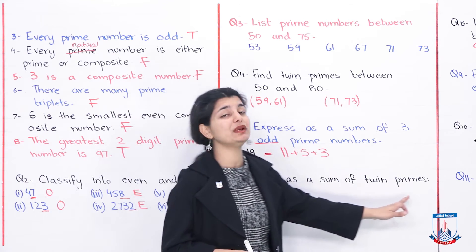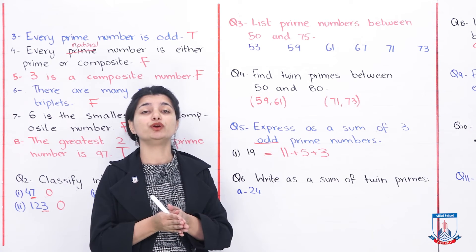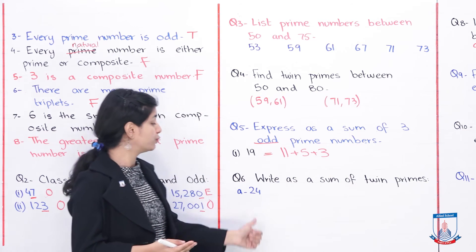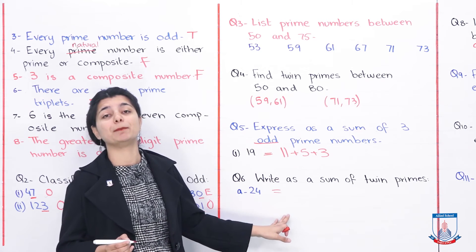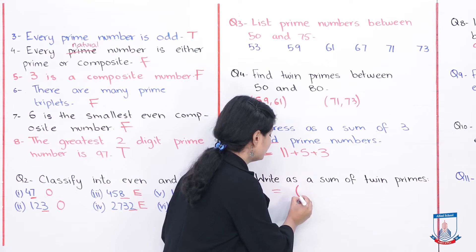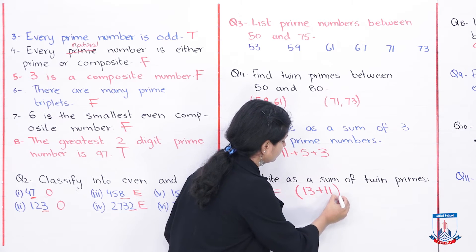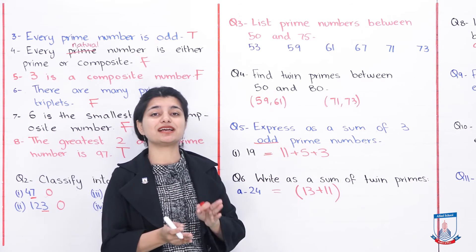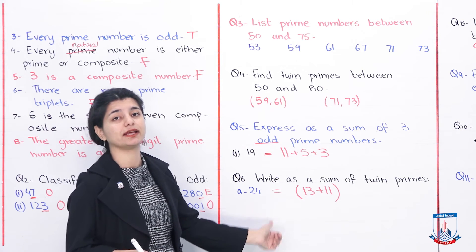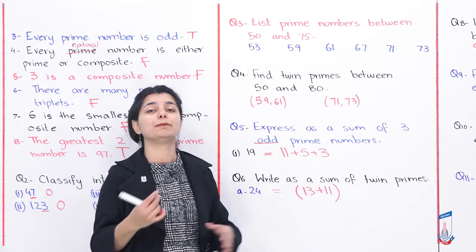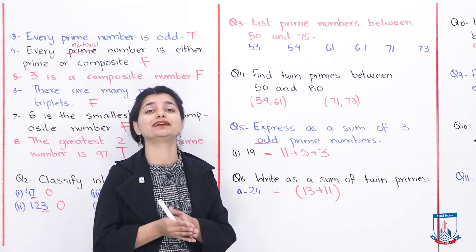Next: write a number as a sum of twin primes. You need to find twin prime pairs and add them. For example, 13 and 11 are twin primes with only 12 between them. Adding 13 plus 11 gives 24. Use the sieve table to find other twin prime pairs for the remaining parts.